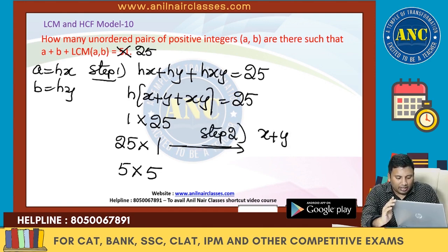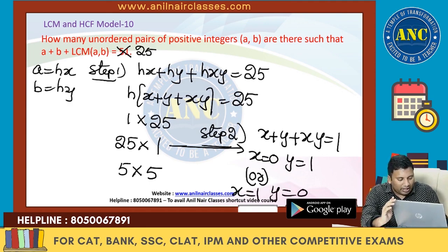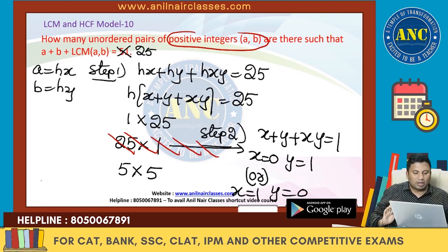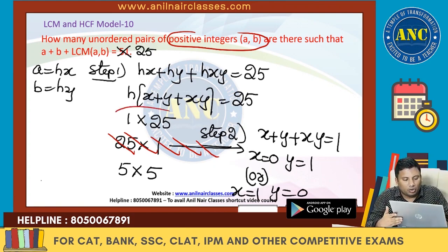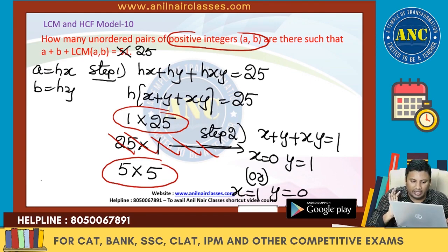If X plus Y plus XY equals 1, that means X is 0 and Y is 1, or X is 1 and Y is 0. But X and Y cannot be 0 because they are positive integers. So that second value is eliminated. I only got 2 valid cases: 1 into 25 and 5 into 5.